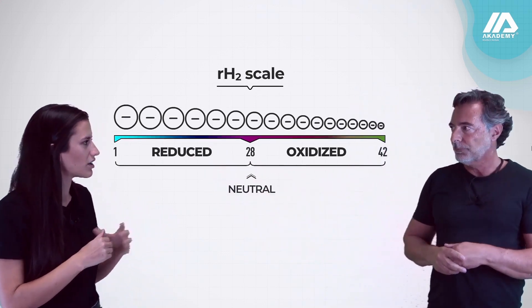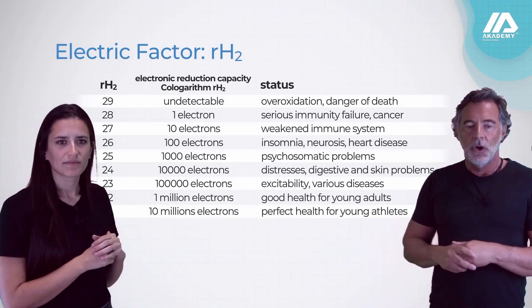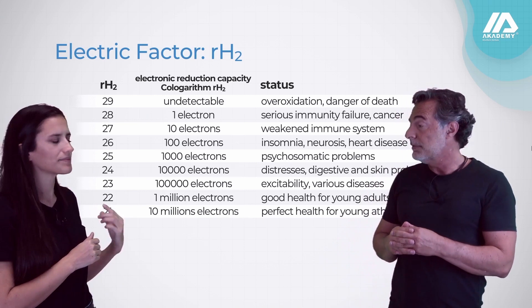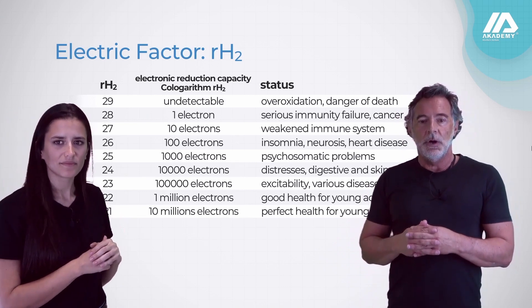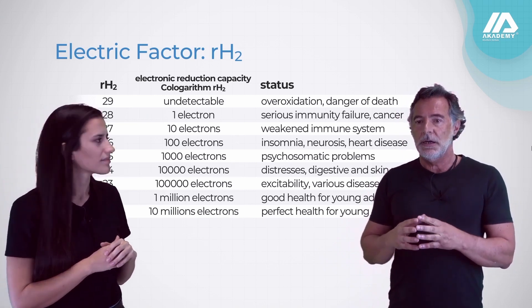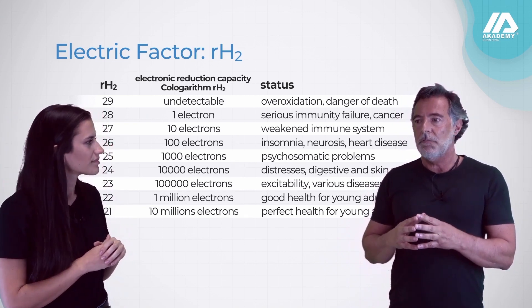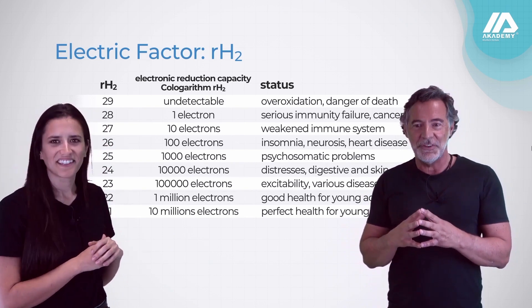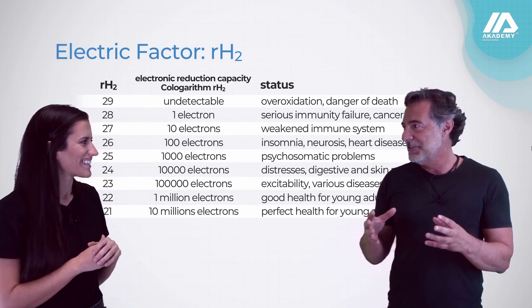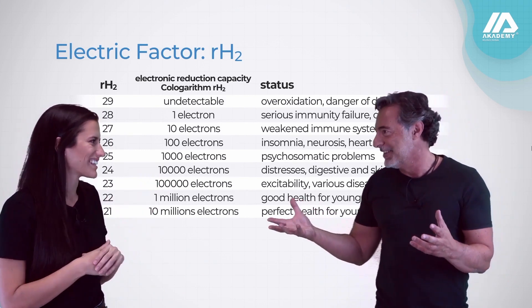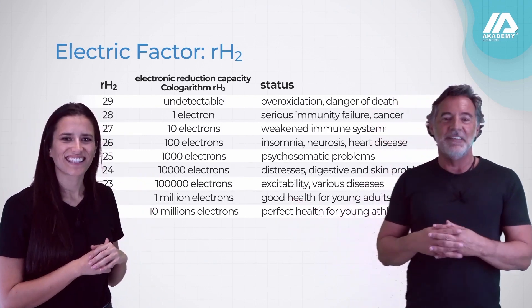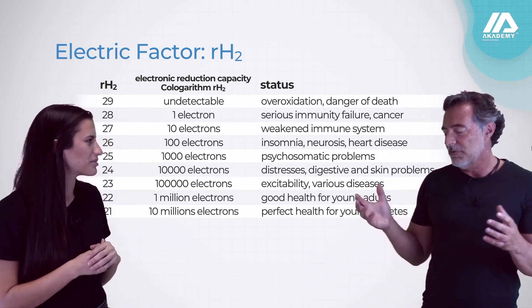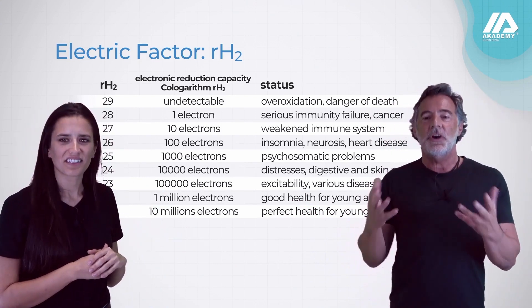Let's see some examples of values. Here we have the RH2 of blood. This is a mathematical concept — it's not easy to count electrons directly because they are very small. This is theoretical, but it helps us understand.